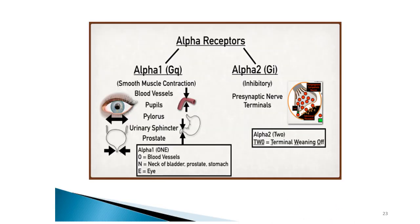Alpha receptors are G-protein coupled receptors. Alpha-1 is a Gq stimulatory receptor, while alpha-2 is a Gi inhibitory receptor. Alpha-1 receptors are located at smooth muscle, and stimulation causes smooth muscle contraction. Locations include blood vessels (causing vasoconstriction), pupillary smooth muscle (causing mydriasis), pyloric smooth muscle, urinary sphincter, and prostate — all causing contraction.